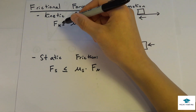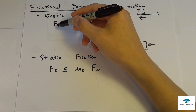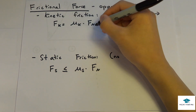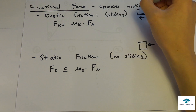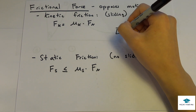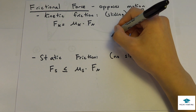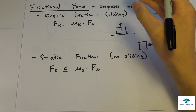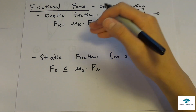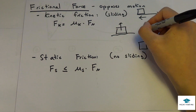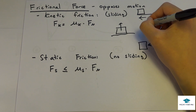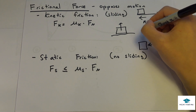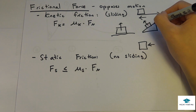The frictional force for kinetic friction is Fk = μk × Fn, where Fn is the normal force. The normal force always acts perpendicular to the surface the object is on — whether that's flat ground or an inclined plane.